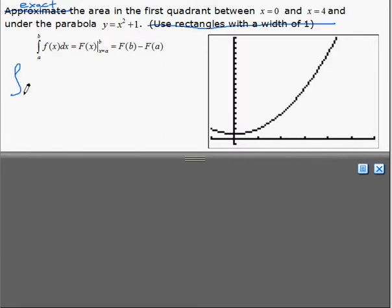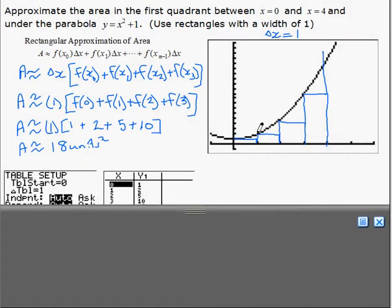So setting up the integral, the integral is going to start at 0 and go to 4 of our function, which is x squared plus 1 dx. So now, up to 4, we're finding the exact area here. And based on our last diagram, we didn't count these little triangles that were left. So our exact area should be a little bit larger.